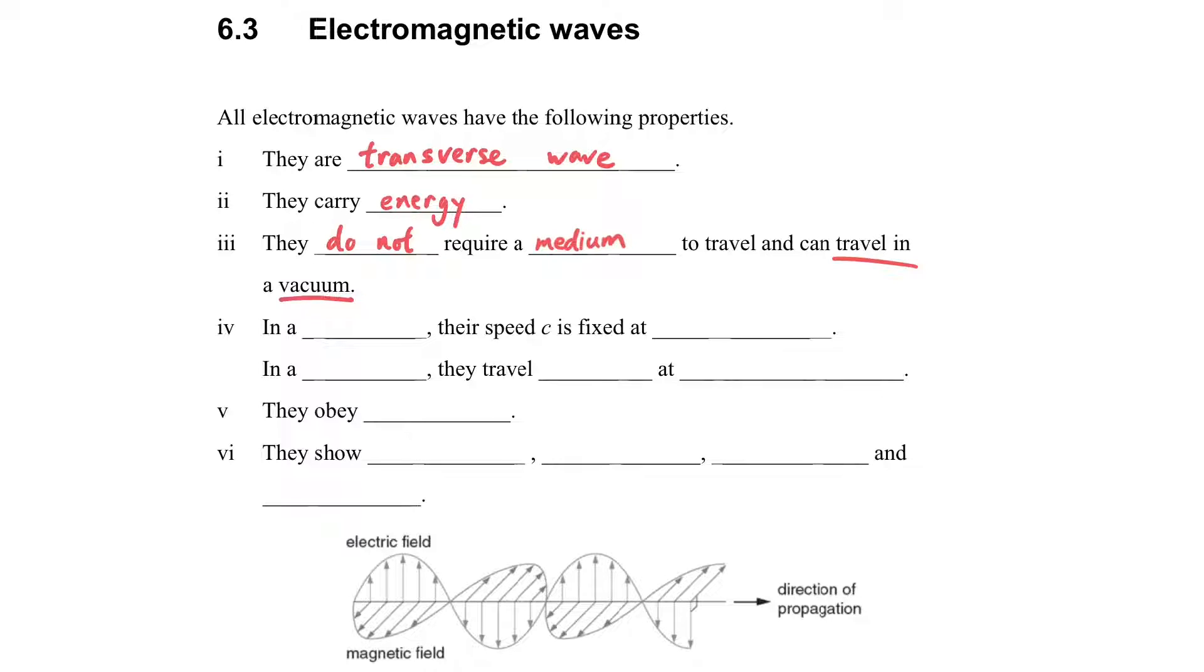In vacuum, the speed is constant, which is 3 times 10 to the power of 8 meters per second. Do you remember we have seen this before? Yes, it is the speed of light.